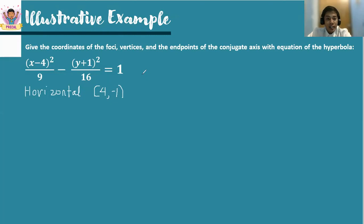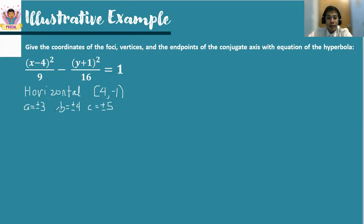Next is to determine the distances a, b, and c. In the formula, our a squared is 9, so a is plus or minus 3. 16 is our b squared, so b is plus or minus 4. While c is the square root of 9 plus 16, which gives us 25, so c is plus or minus 5. Remember that it's like the Pythagorean theorem, so we also form a triple: 3, 4, 5 respectively.